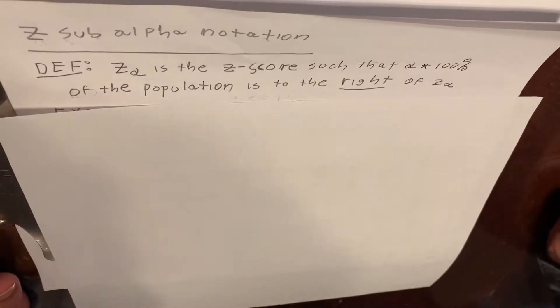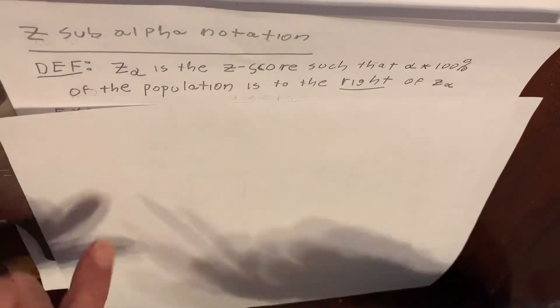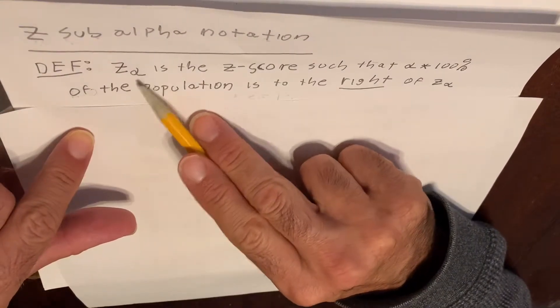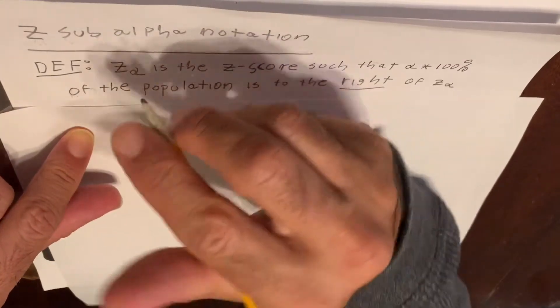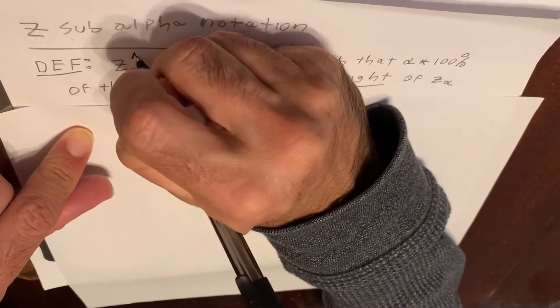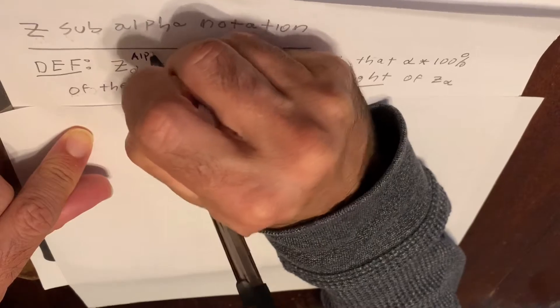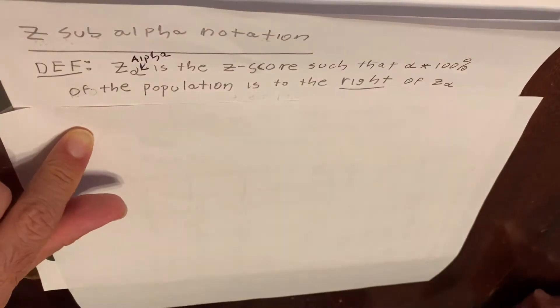First of all, let me define what Z sub alpha actually means. So, this is a Greek letter alpha. It looks a little bit like a two, but it's not a two. It's an alpha. And we read this symbol, Z sub alpha.